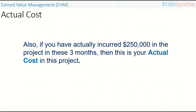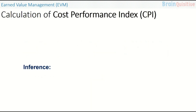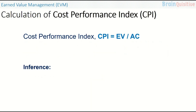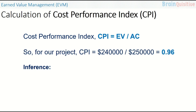If you have actually incurred 250,000 dollars in the project in these 3 months, then this is your actual cost: AC equals 250,000 dollars. From these three parameters — EV, PV, and AC — we can now calculate the Cost Performance Index, which is EV divided by AC. For our project, CPI equals 240,000 divided by 250,000, which equals 0.96.